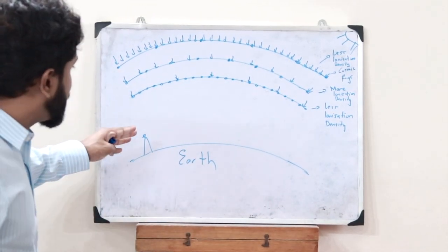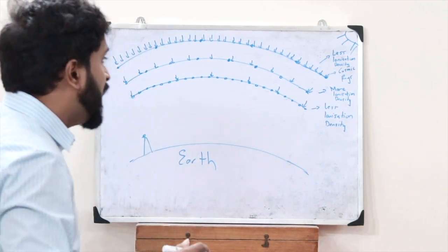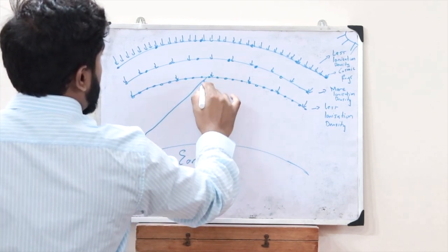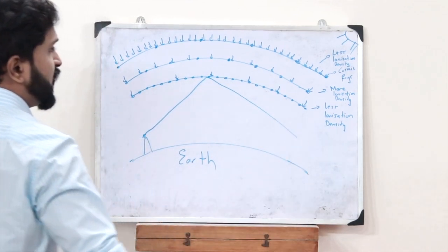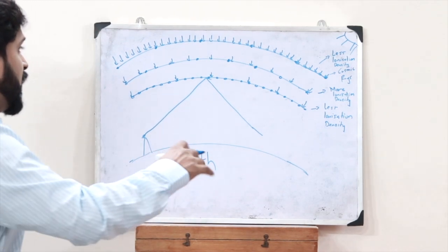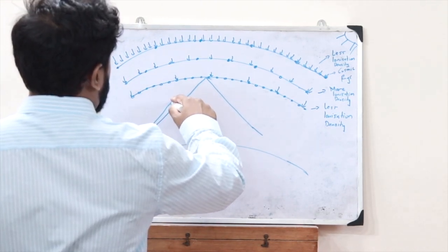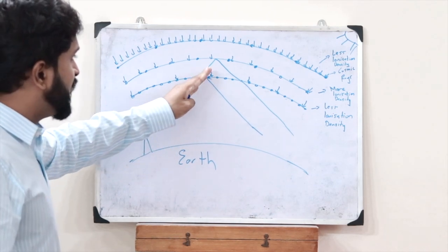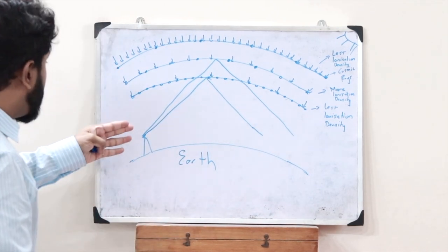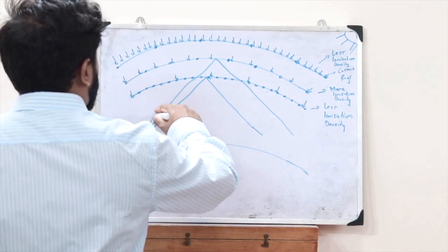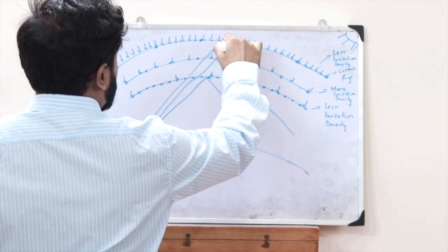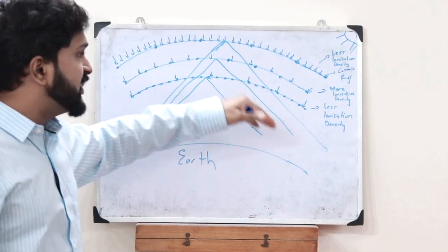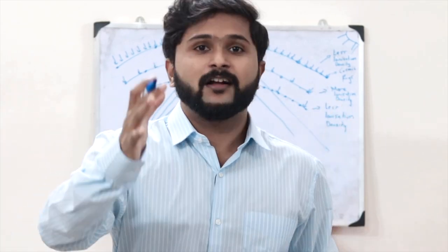Consider a transmitter antenna generating a signal of 2 megahertz. It gets reflected back by the lowermost ionospheric layer, giving a shorter range. If the transmitter generates 15 megahertz, the signal penetrates the first layer but gets reflected by the second layer, giving a greater range. At 30 megahertz, the signal penetrates the second layer and gets reflected at the topmost layer, providing even more range. This increasing range with frequency makes sky wave propagation useful for longer distance communication.